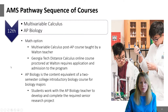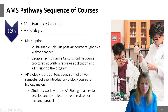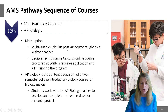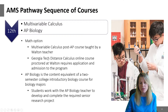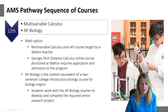Moving on to the twelfth grade, we're looking at the math options — there are two. You're going to take multivariable calculus, and you have the option of either taking this post-AP course at Walton taught by a Walton teacher, or applying to the Georgia Tech distance program. The Georgia Tech option does require an application and you have to be admitted. Those students take their distance calculus class at Walton, proctored by a Walton teacher, but it is an online course provided through Georgia Tech. So there are two options for math as a senior.